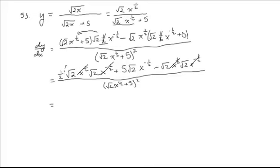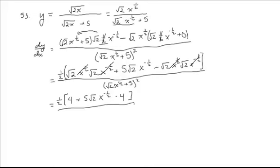Let's put this numerator in a set of parentheses because of that 1 half out front. So we have 1 half times: rad 2 times rad 2 is 4, wait — actually rad 2 times rad 2 is 2, so this first term gives 2 times x to the 0, which is 2. Plus 5 times square root of 2 times x to the minus 1 half, minus 4. All over square root of 2 times x to the 1 half plus 5, that whole quantity squared.